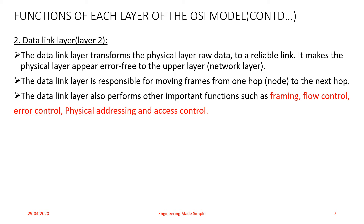The next important function is flow control. If the rate at which the data is absorbed by the receiver is less than the rate at which data is produced by the sender, the Data Link layer imposes a flow control mechanism to avoid overburdening or overwhelming the receiver.